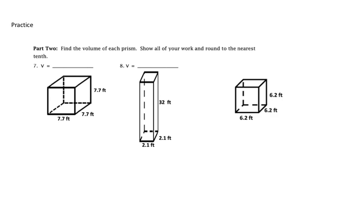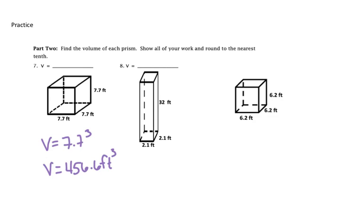Welcome back, you guys. Our first shape is a cube, so all three dimensions are the same. So instead of doing 7.7 times 7.7 times 7.7, we can do 7.7 cubed. Remember, we're going to be rounding to the nearest tenth, so we're going to get 456.6 feet cubed.